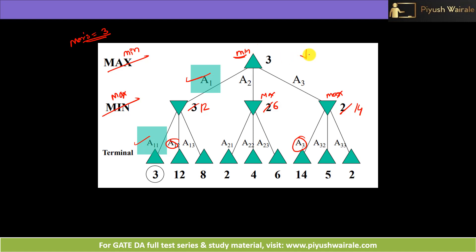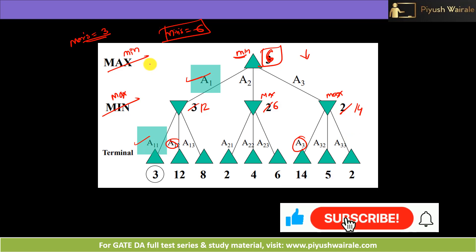Min will try to minimize the value of Max. Out of {12, 6, 14}, the minimum is 6, so Min will take action a2. The final value when Min goes first is 6. I hope you understand this concept and how the minimax algorithm works. More examples will be discussed in the tutorial. Thank you.